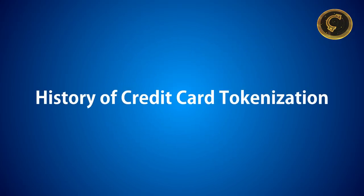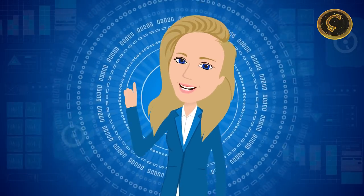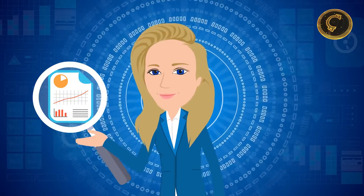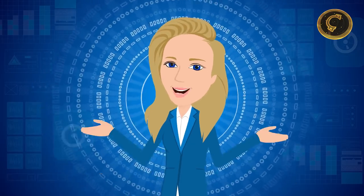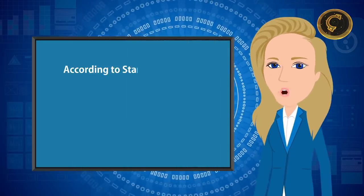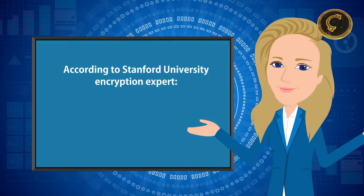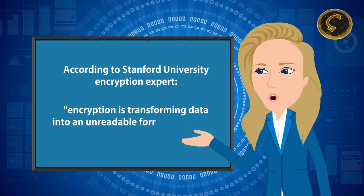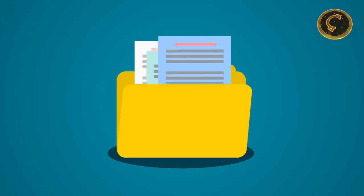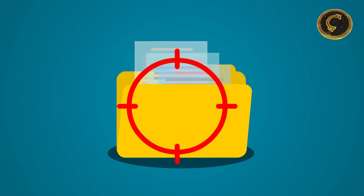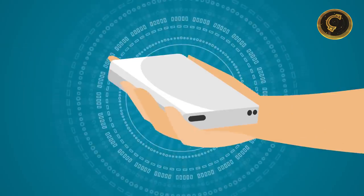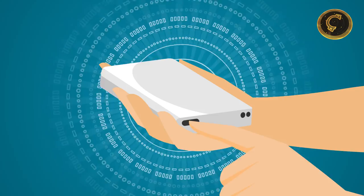History of credit card tokenization. Alternative techniques such as tokenization have been used for decades to isolate data in ecosystems such as databases. Historically, the encryption of a key is a reversible cryptographic method of protecting confidential data. According to Stanford University encryption expert, encryption is transforming data into an unreadable format for anyone without a secret key to decryption. Its purpose is to provide privacy by keeping information hidden from anyone not targeted, even those who can see the encrypted data — for example, someone may want to encrypt the files on the hard drive to prevent intrusive reading.